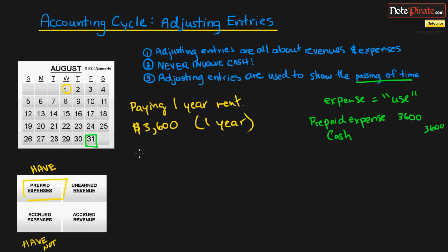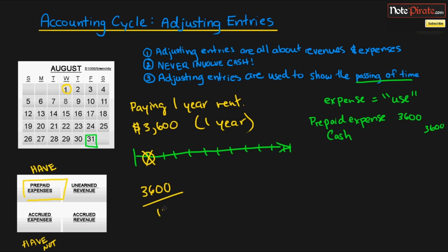Now one month goes by. If we think about a timeline we have one year — 12 months — and we're at the point where one month has elapsed. We need to record that we've used one month of this rent contract. So we take the $3,600 and divide it by 12 months, because this is for an entire year and August was the first month of our lease. That gives us $300 a month.